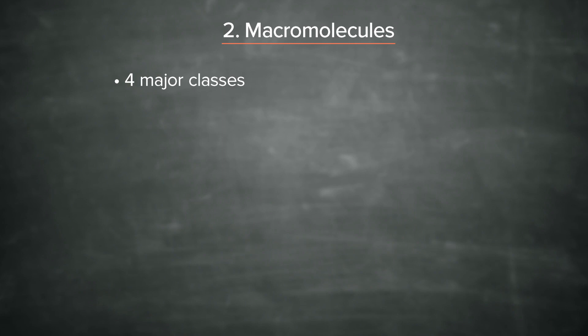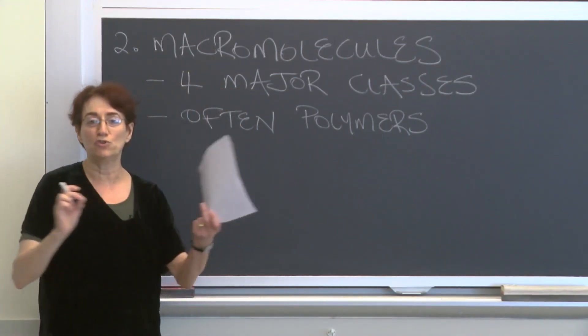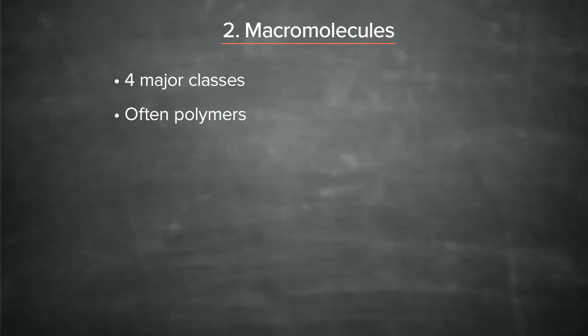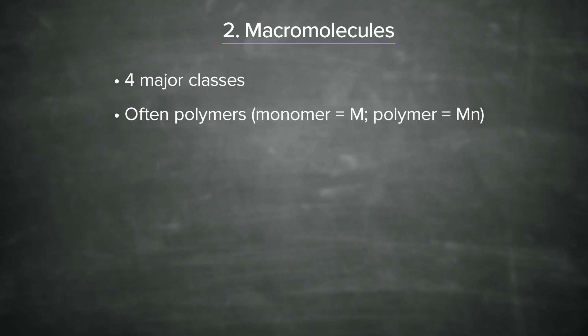We'll go through each of the classes now. They are often polymers — that is, some kind of joining together of a monomer, which we sometimes write as M. A polymer would be M to the N, or N monomer units joined together to make the polymer.